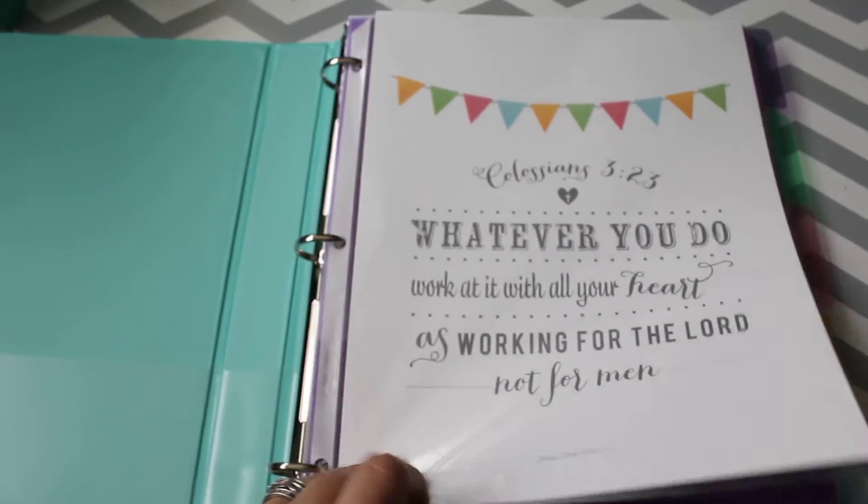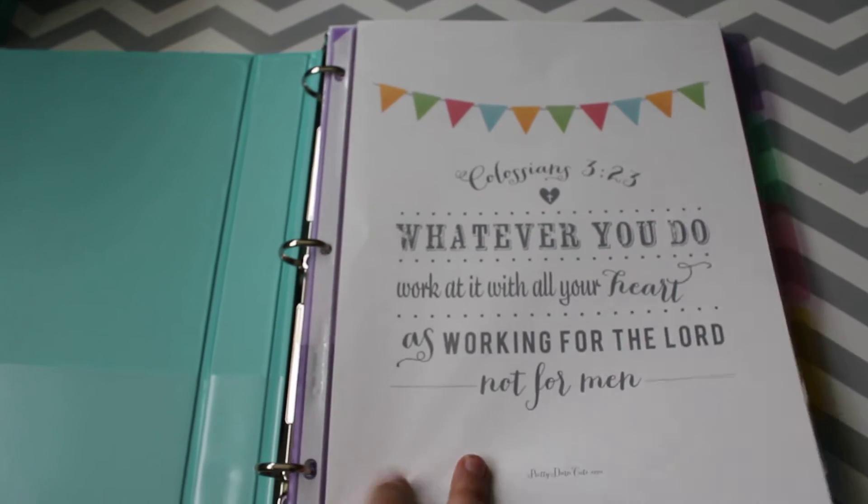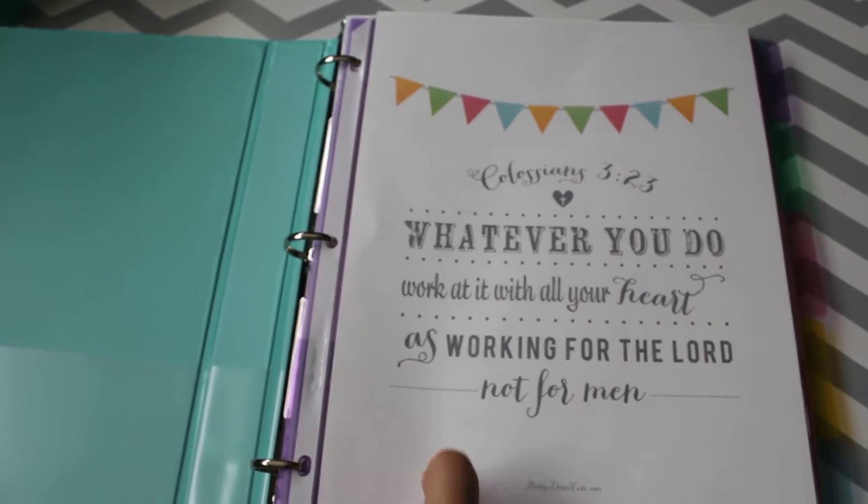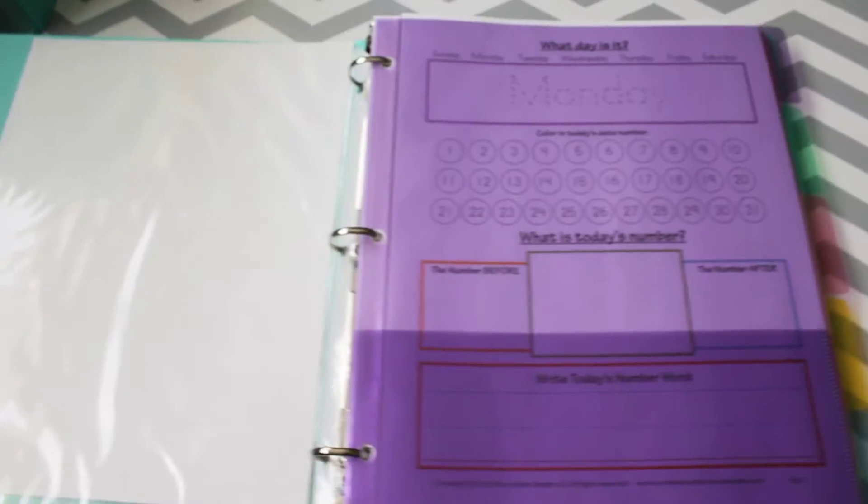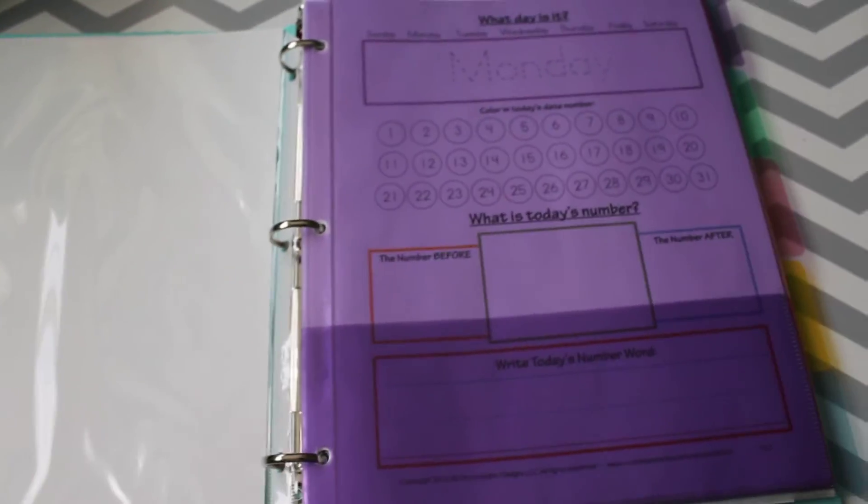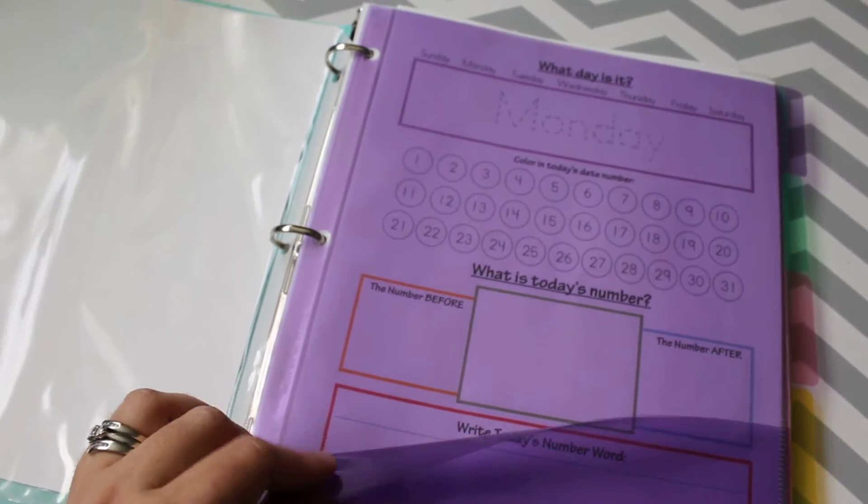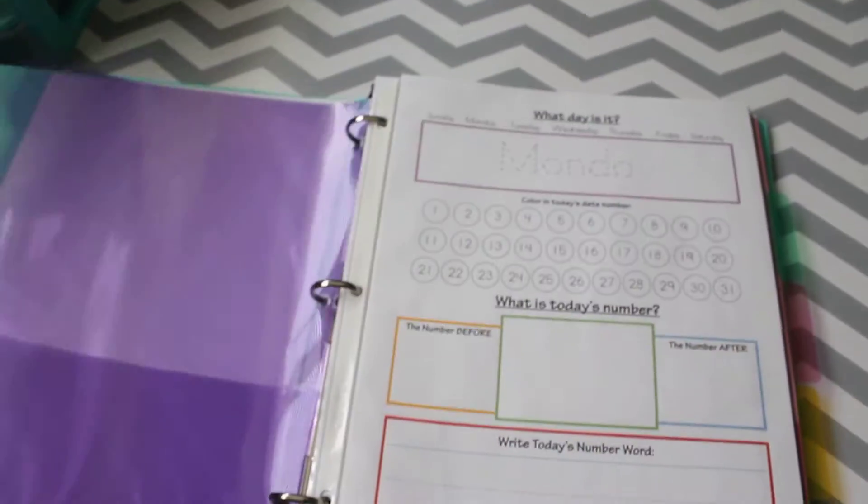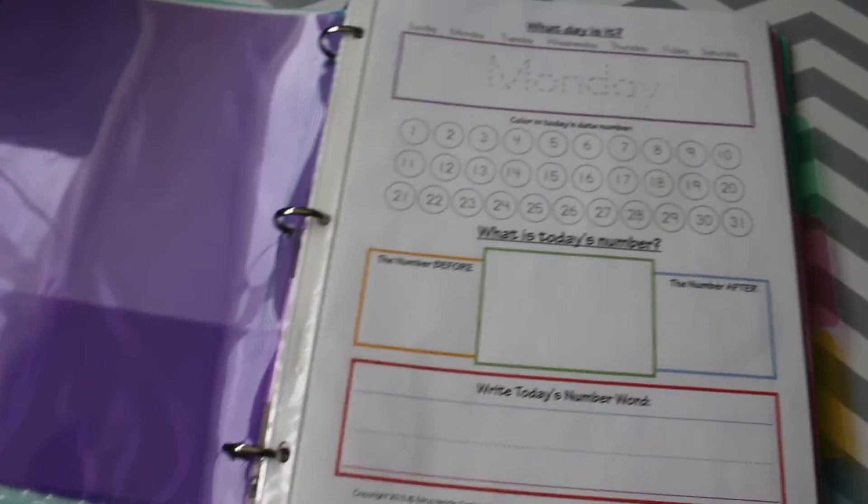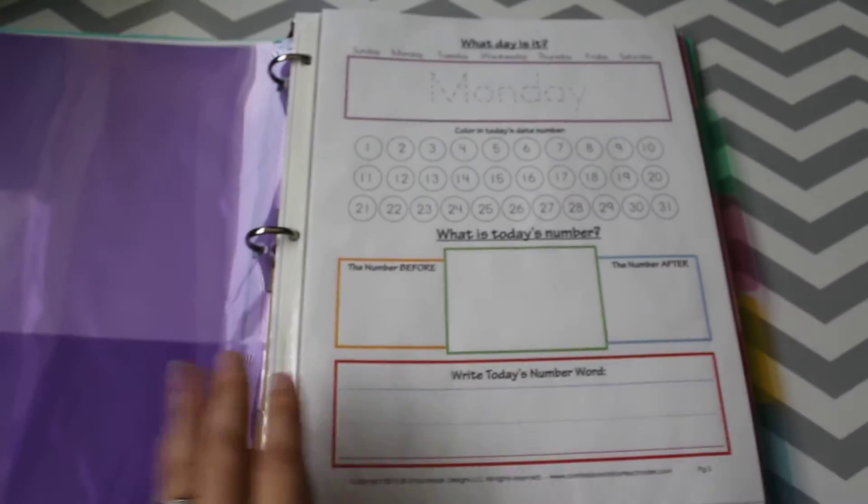When you open it up I just printed them off each a Bible verse, just a good reminder as they're working hard throughout this school year. These dividers I actually got at Dollar Tree and they're like my favorite dividers because they're super thick and sturdy. They have a pocket which is nice.